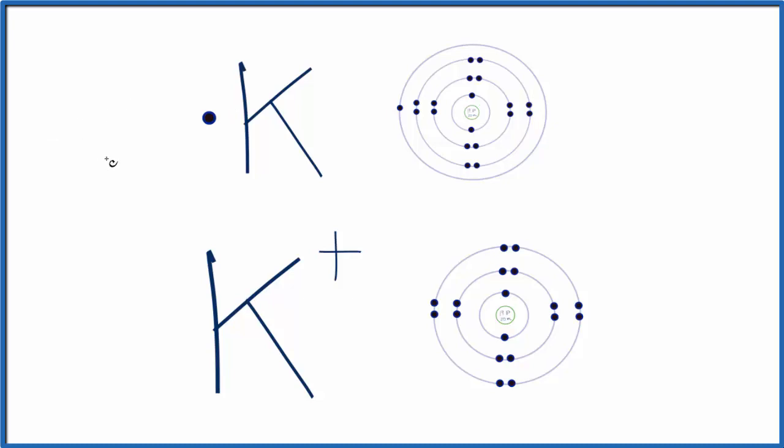It gives this electron away when it bonds with another element, and then underneath it has this outer shell that's full. It's like a noble gas. It's very stable.